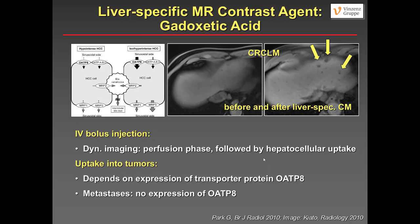Liver-specific contrast agents — gadoxetic acid and gadobenate dimeglumine — are very helpful. You can inject them as a bolus for dynamic imaging of perfusion and extracellular properties, followed by hepatocellular uptake. This uptake depends on whether cells still have the transporter protein; metastases do not have this hepatocellular transporter. So on hepatobiliary phase imaging, metastases appear dark, making even small, indistinct lesions on T1 pre-contrast much more conspicuous.